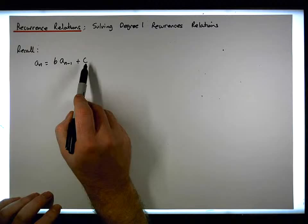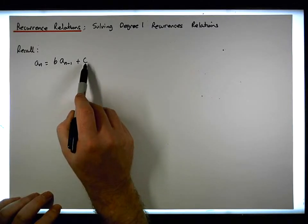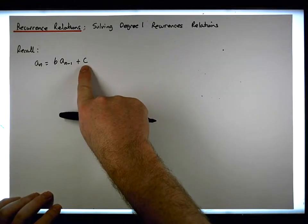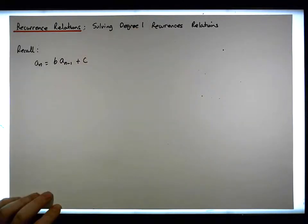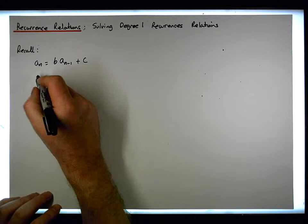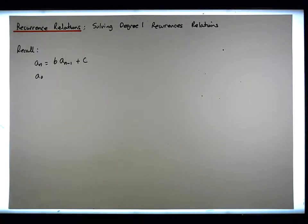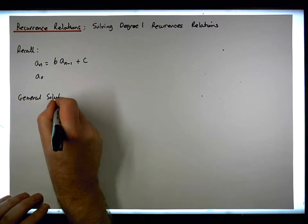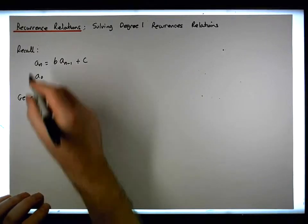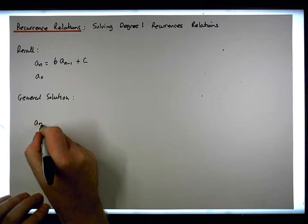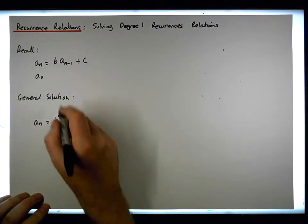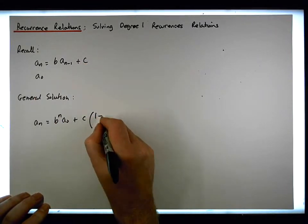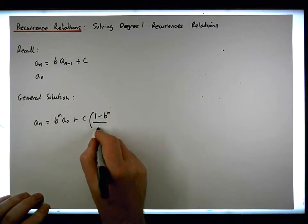The recurrence is either homogeneous or heterogeneous depending on the term c. If c is zero, it falls away and this just becomes a homogeneous recurrence. If c is not equal to zero, then this is a heterogeneous recurrence of degree one. What's important is that we have some base case, let's say a_0. The general solution we developed is that a_n equals b^n times a_0, plus c times (1 minus b^n) divided by (1 minus b).